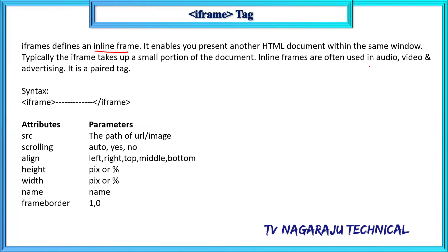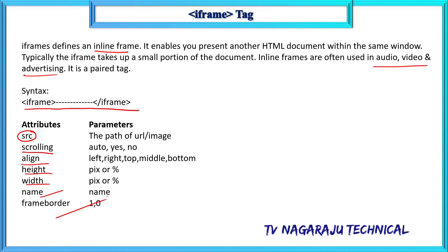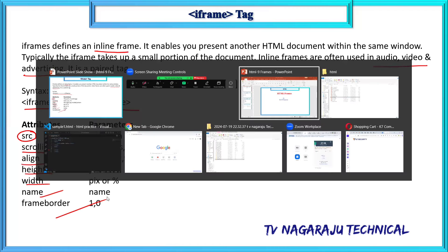Within the frames you can use audio, videos, images, and so on — anything can be placed. The iframe tag is a pair tag. Its attributes include: source, scrolling, align, height, width, name, and frameborder. We will discuss each one step by step.